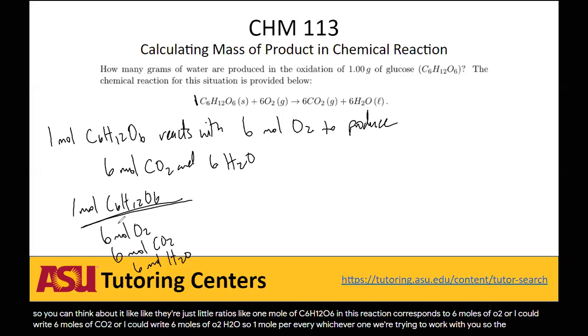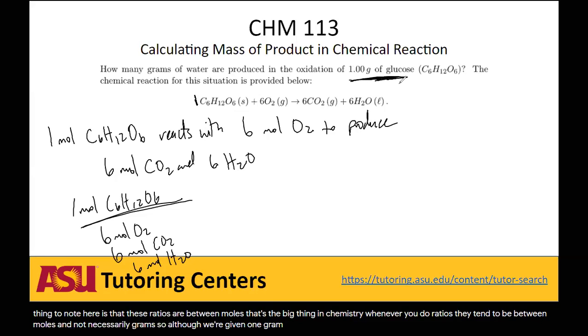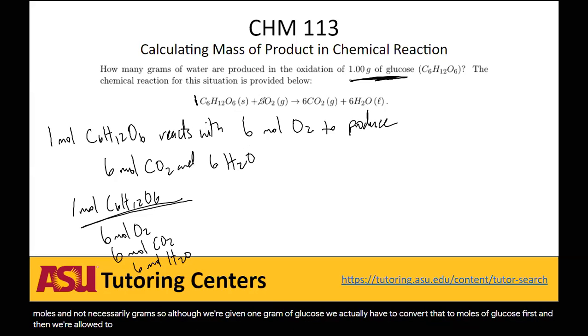The important thing to note here is that these ratios are between moles. That's the big thing in chemistry. Whenever you do ratios, they tend to be between moles and not necessarily grams. So although we're given one gram of glucose, we actually have to convert that to moles of glucose first, and then we're allowed to start jumping around between glucose. We can jump over to oxygen if we want, or carbon dioxide, or water, or whatever we're particularly looking for.